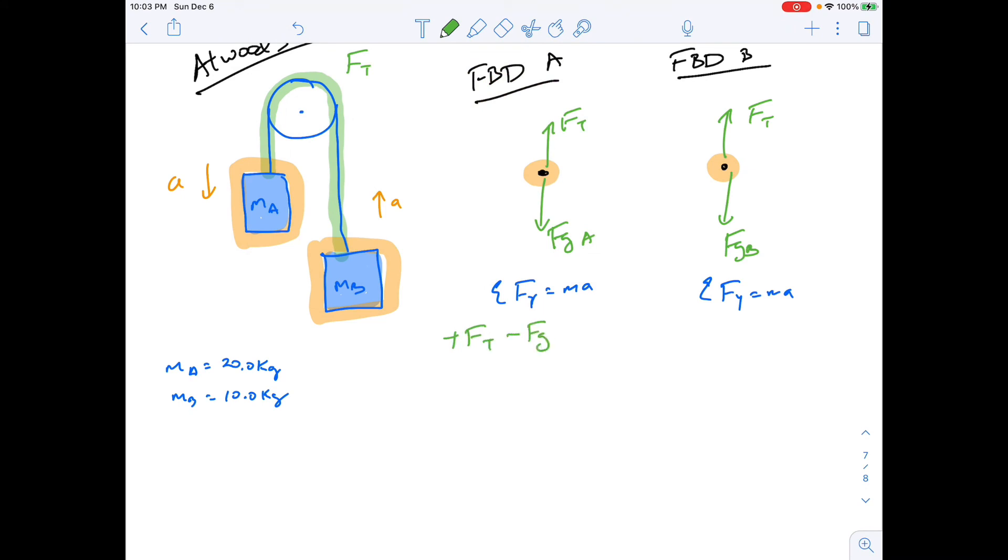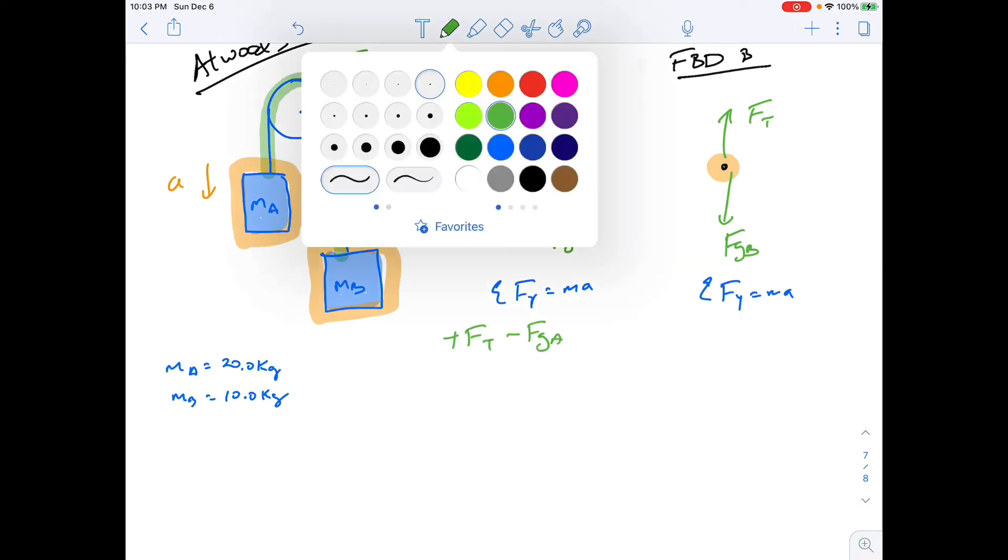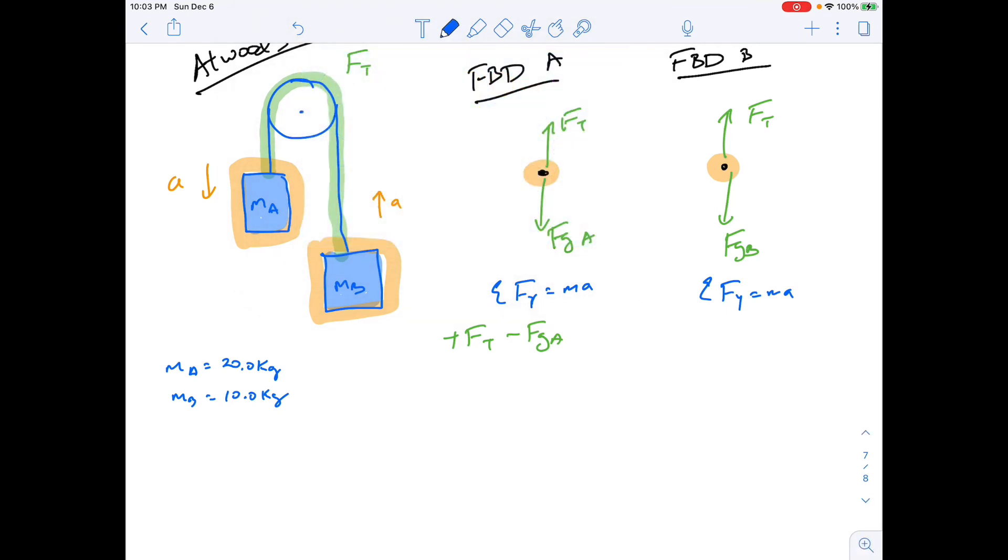So what we can do, summation of the forces in the Y equal MA. We're definitely accelerating for this one. And summation of the forces in the Y equal MA for this one. And again, positive FT minus FGA equals, now this one's moving down. MA minus A. Again, huge right here. And that's, again, the thing everyone's going to forget. All the students are going to forget that.